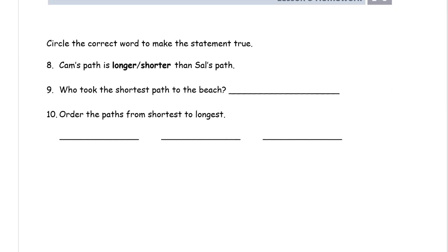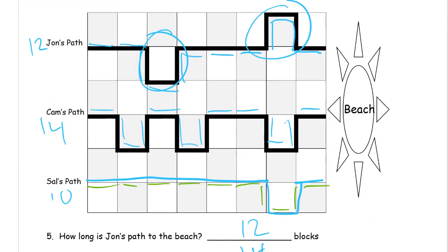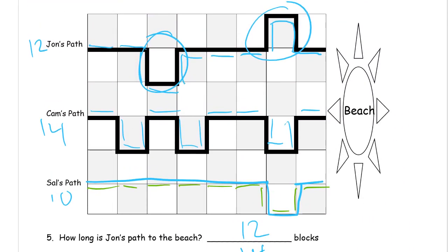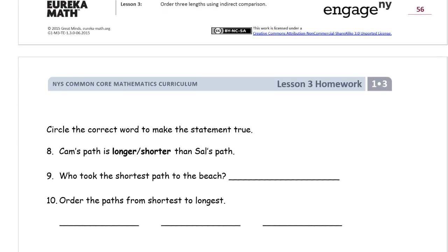And then to circle the correct word to make the statement true. Cam's path, is it longer or shorter than Sal's path? Let's go back here and look. Is Cam's path longer or shorter than Sal's path? Well, Cam's path is 14. Sal's is 10. So Cam's is longer than Sal's. So longer than is what we want. Longer than Sal's path.